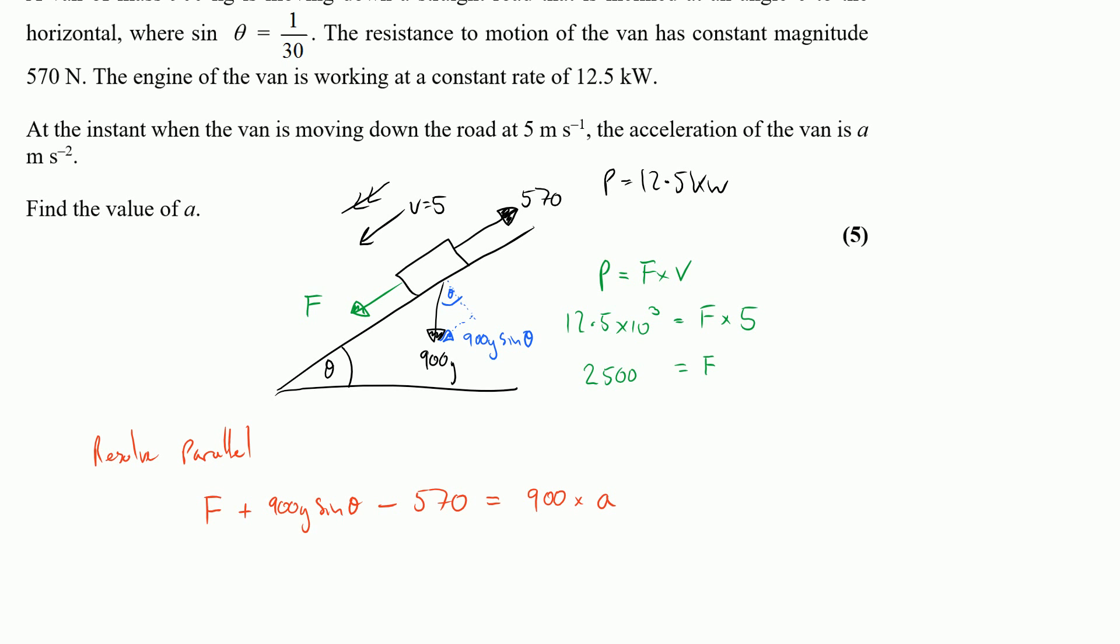Substituting numbers in now we've got here 2500 was our value for F. Sine theta was 1 over 30 so this becomes 30 G minus 570 is equal to 900 A.